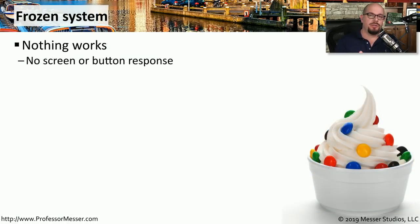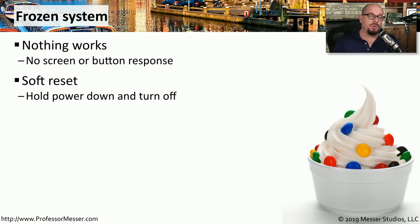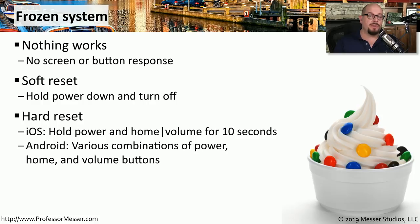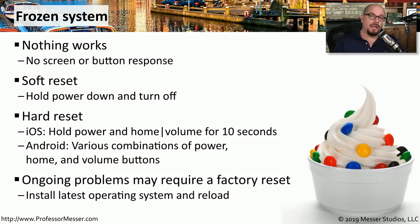If your mobile device suddenly stops working — it freezes completely, you can't get any response from the screen, nothing is moving, and even the clock has stopped updating — try a soft reset by holding down the power key to power off and restart. If the system is not responding to a button press, you may have to perform a hard reset. On iOS, hold the power and either the home or volume button for 10 seconds. On Android, a similar set of keystrokes performs the hard reset. If this is an ongoing problem, consider a factory reset and reloading your apps as if it were a brand new install.